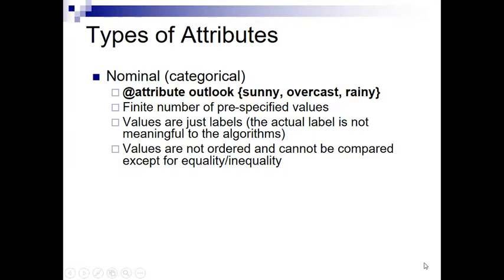Nominal is different. These are categorical with a discrete set of values. Whereas for a continuous numeric attribute, there are infinitely many possible values. For something like Outlook, as we have seen in our play tennis data set, it has only 3 values. When that attribute is declared in the header of an ARFF file, you start out with @attribute, then the name of the attribute, and then in curly braces, we have the list of possible values.